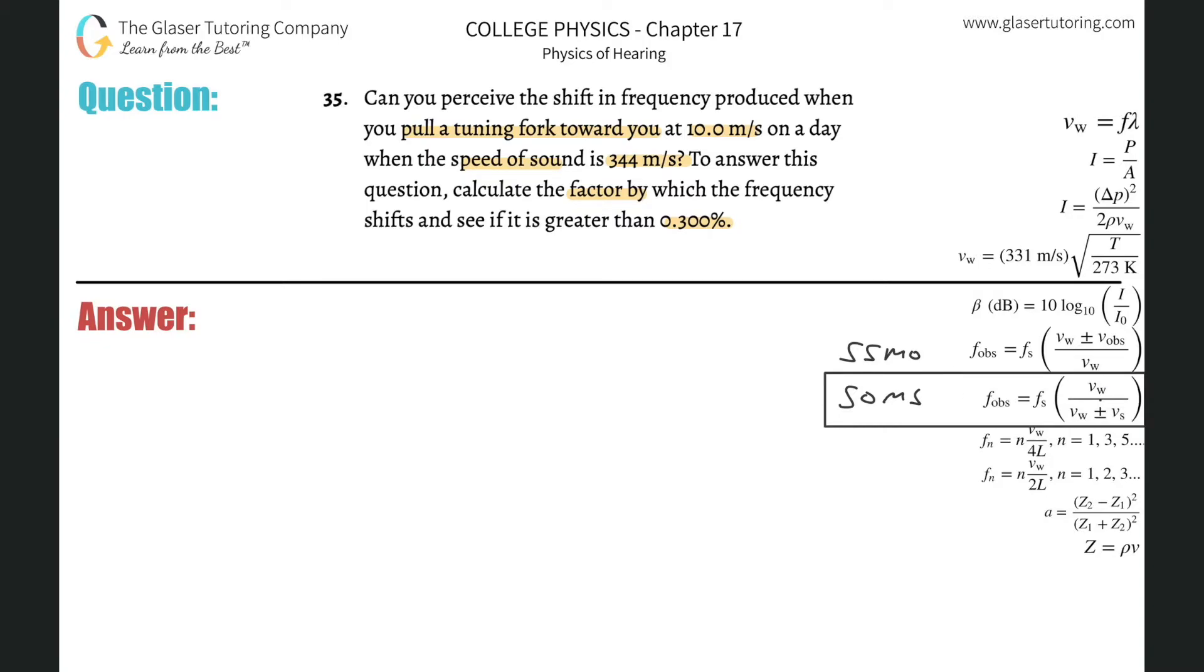We're going to use that formula. The frequency of the observer equals the frequency of the source times the velocity of sound divided by the velocity of sound plus or minus the velocity of the source. You've got two signs here, but only one works for this problem. When the object moves toward you and is producing the sound, you're going to be dealing with the minus. Number 30 explains why.